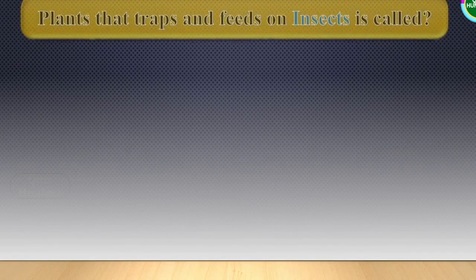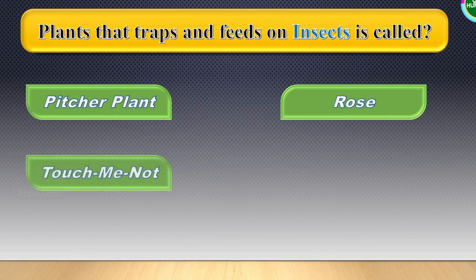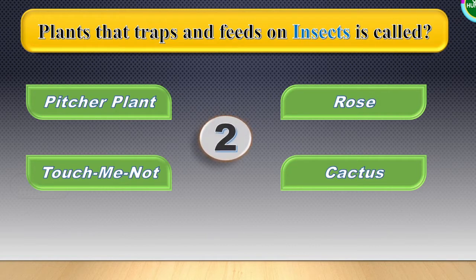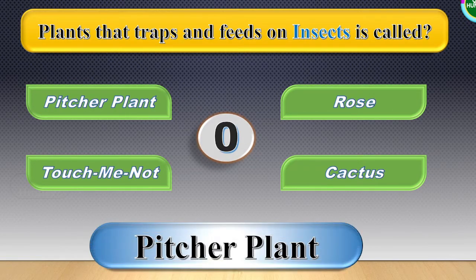Next question: Plants that trap and feed on insects are called. The options are visible in the screen. Your time starts now. The correct answer for this one is pitcher plant.